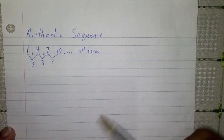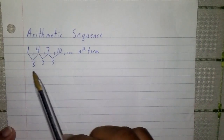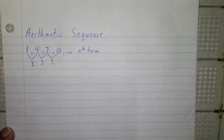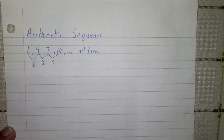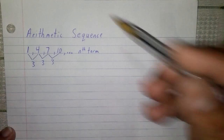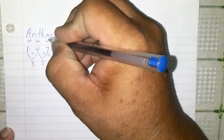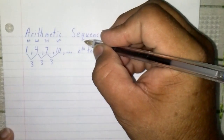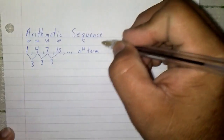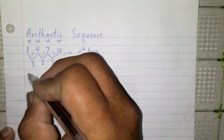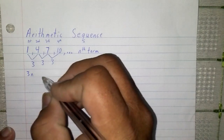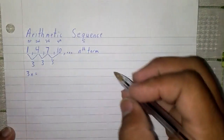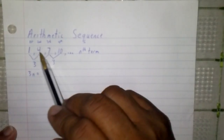Therefore, what we do is form a relationship. Instead of adding 3s repeatedly, we simply multiply. Since we don't know what position of number we want, we call it n — the position. This is the first number, second, third, fourth, and this is the nth term. So we say 3 times n, where n is simply the position of the number: first, second, third, fourth.